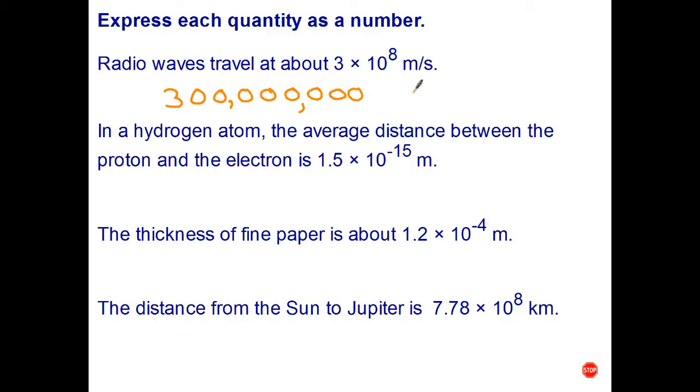In a hydrogen atom, the average distance between the proton and the electron is 1.5 times 10 to the negative 15th meters. Well, once again I'm going to have to leave a little bit of space before I start writing.